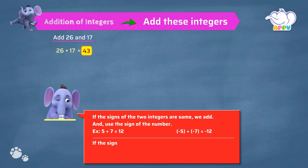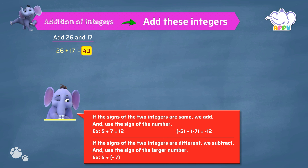If the signs of the two integers are different, we subtract and use the sign of the larger number. For example, 5 plus minus 7 equals minus 2. Minus 5 plus 7 equals 2.